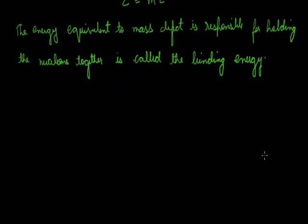The binding energy per nucleon is the binding energy calculated per individual nucleon, and it is a measure of the stability of the nucleus. It may also be considered as the energy required to separate the individual particles of the nucleus. If we supply the equivalent energy to any particle, the particles will be free. So while its name indicates it binds, it can equally be interpreted as the energy needed to separate the particles.